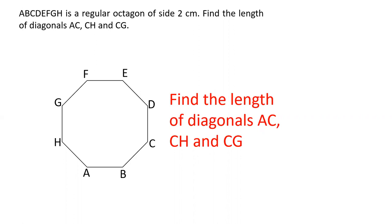There is a regular octagon A, B, C, D, E, F, G, H and each side of the octagon is 2 cm. We have to calculate all the diagonals.